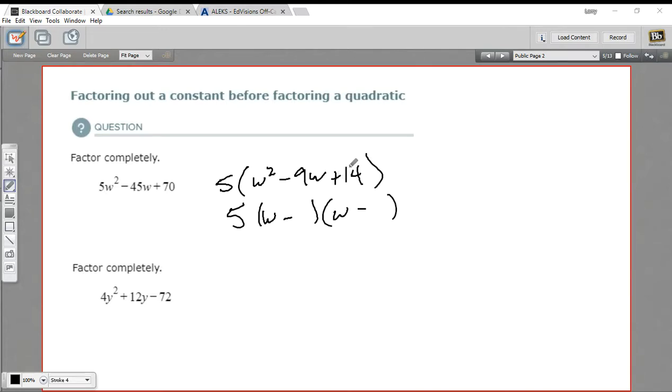And the somethings need to multiply out to positive 14 and add up to negative 9. 2 times 7 is 14. If they're both negative, a negative 2 and a negative 7, that would add up to negative 9. So these are my factors. And here's the whole thing. 5 times w minus 2 times w minus 7.